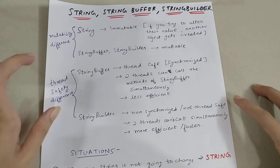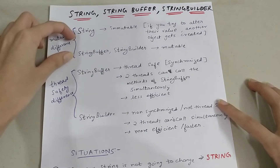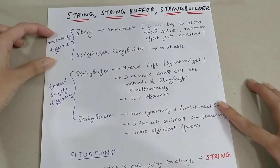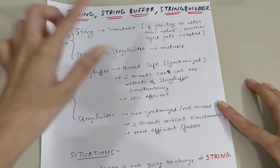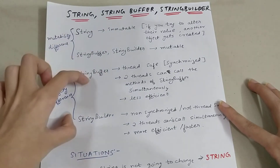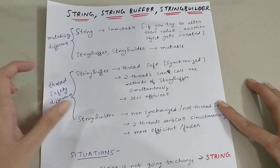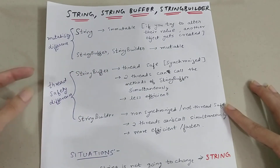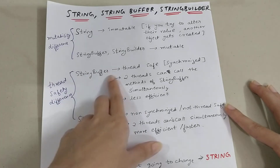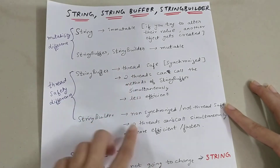So to summarize: the difference between String, StringBuffer, and StringBuilder is the mutability difference — String is immutable, while StringBuffer and StringBuilder are mutable. And the difference between StringBuffer and StringBuilder lies in thread safety.